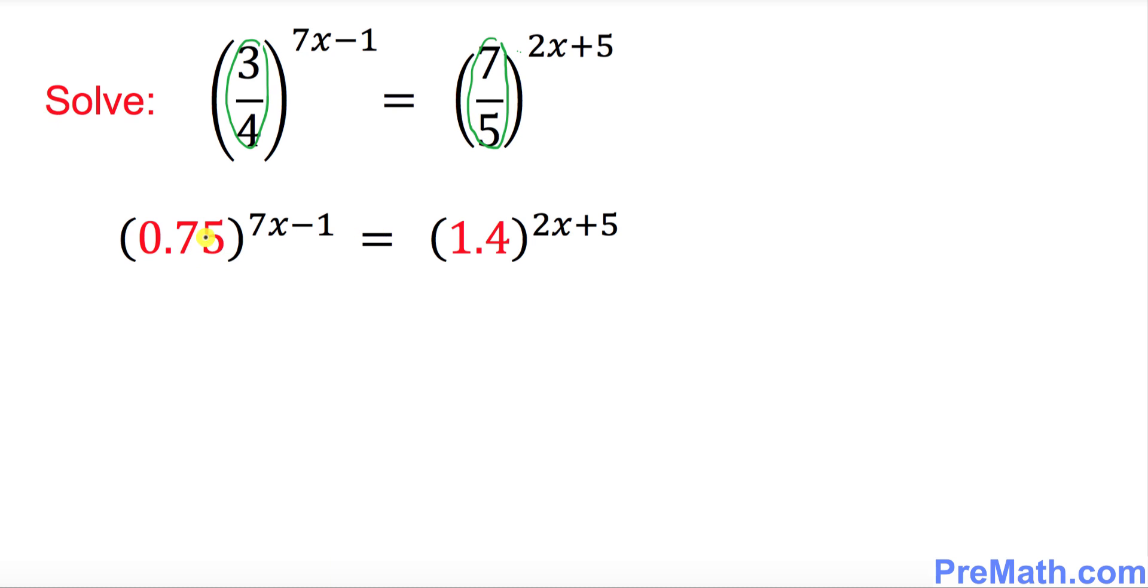So in this step we have converted this fraction into the decimal. So 3 over 4 turns out to be 0.75. On the other side 7 over 5 turns out to be equal to 1.4.